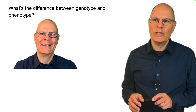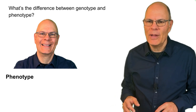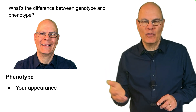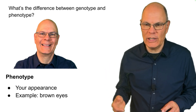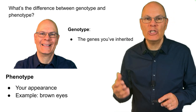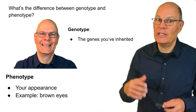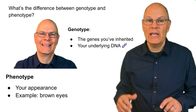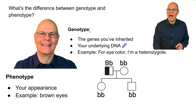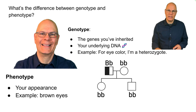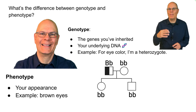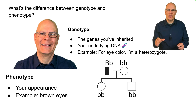What's the difference between genotype and phenotype? Phenotype is your appearance — the observable characteristics in an organism. An example is brown eyes. Genotype is the genes you've inherited, the type of genes that you have — it's your underlying DNA. My eye color is brown, which is a dominant phenotype, though eye color is actually complex with many alleles involved.